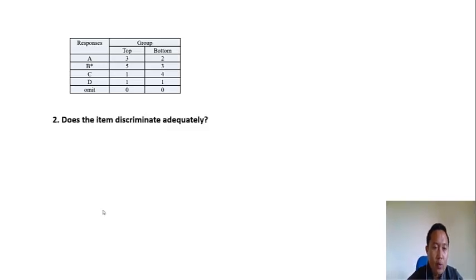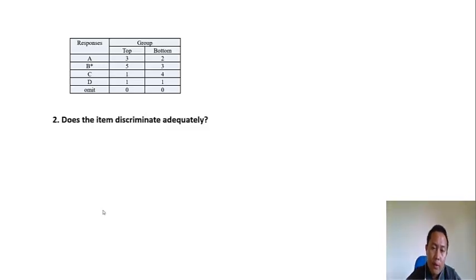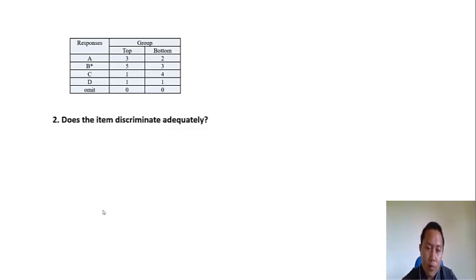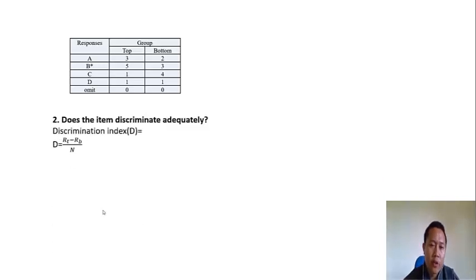The second question is: does the item discriminate adequately? It is asking whether the item or question is discriminating poor students from good students — those who didn't study from those who did study. This is very important.